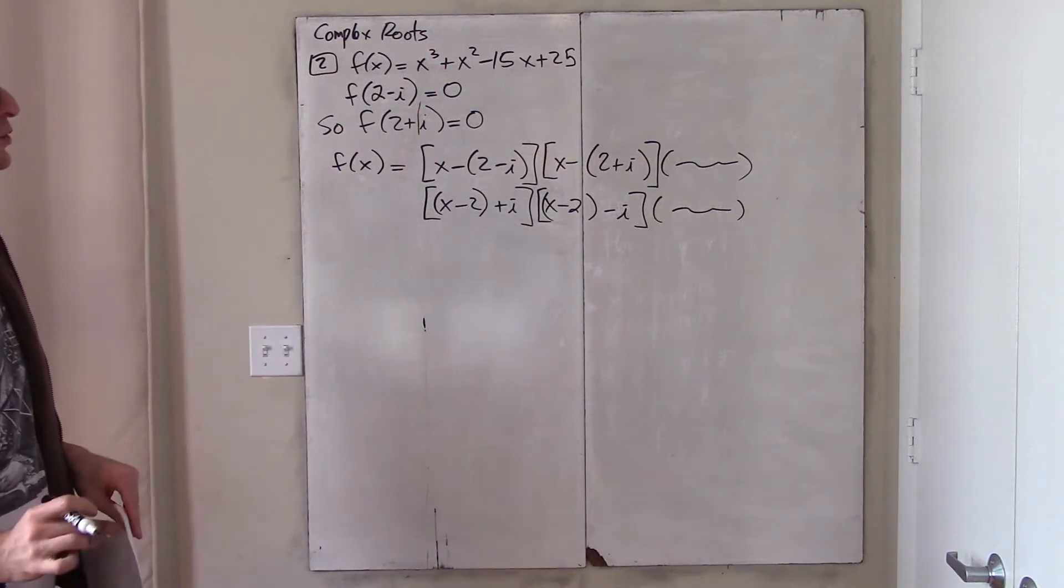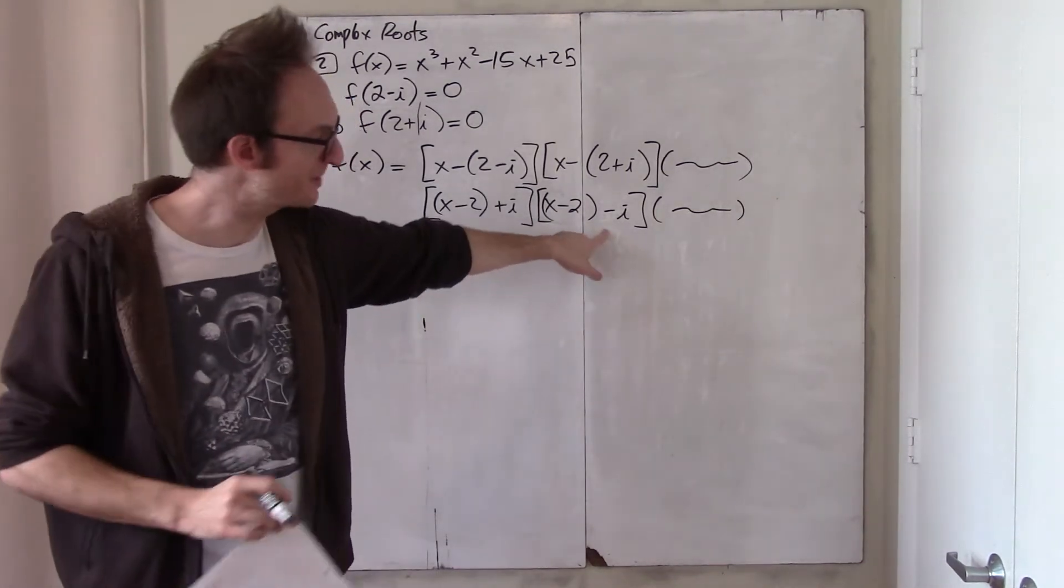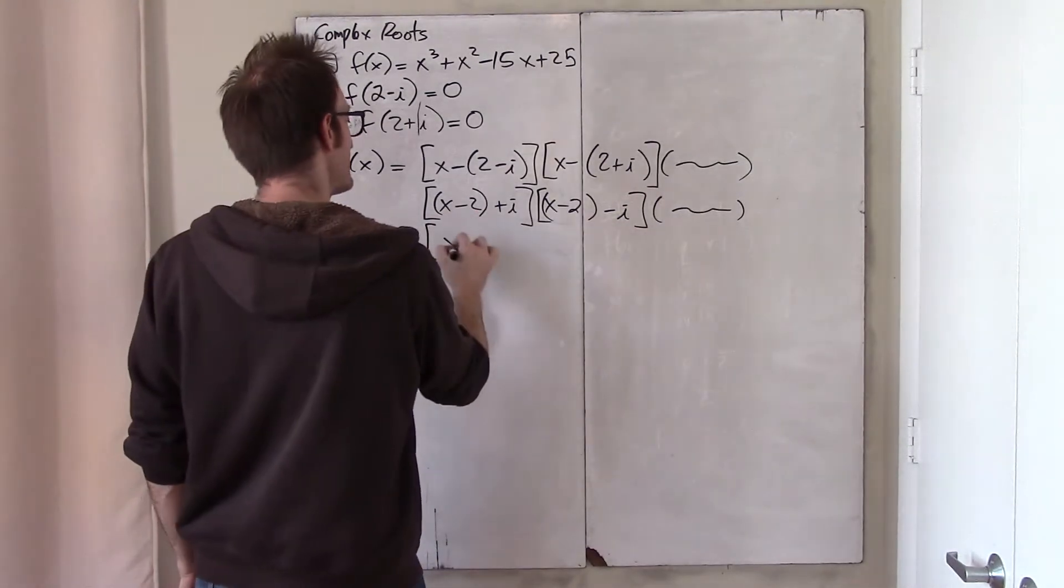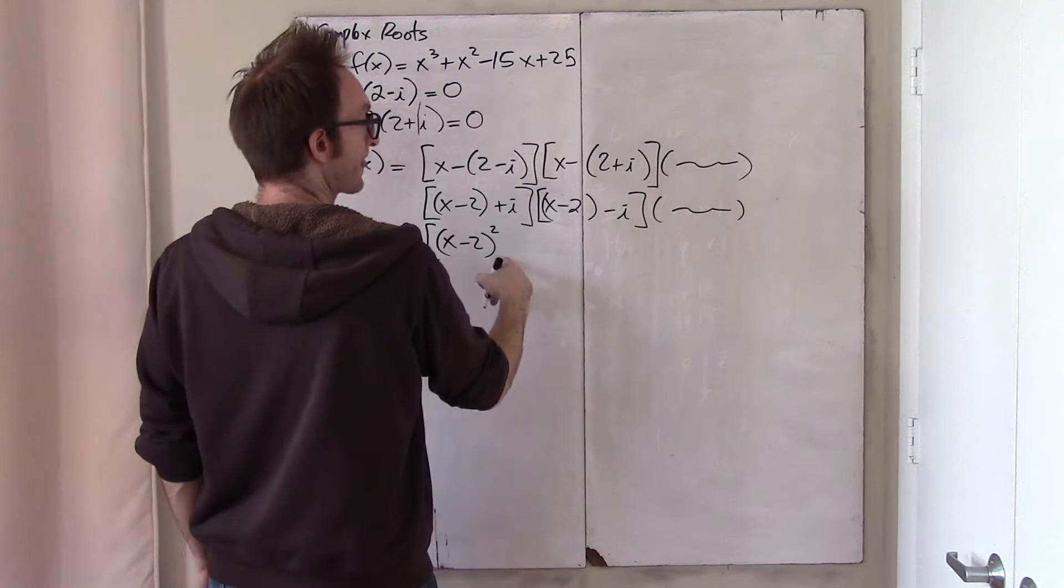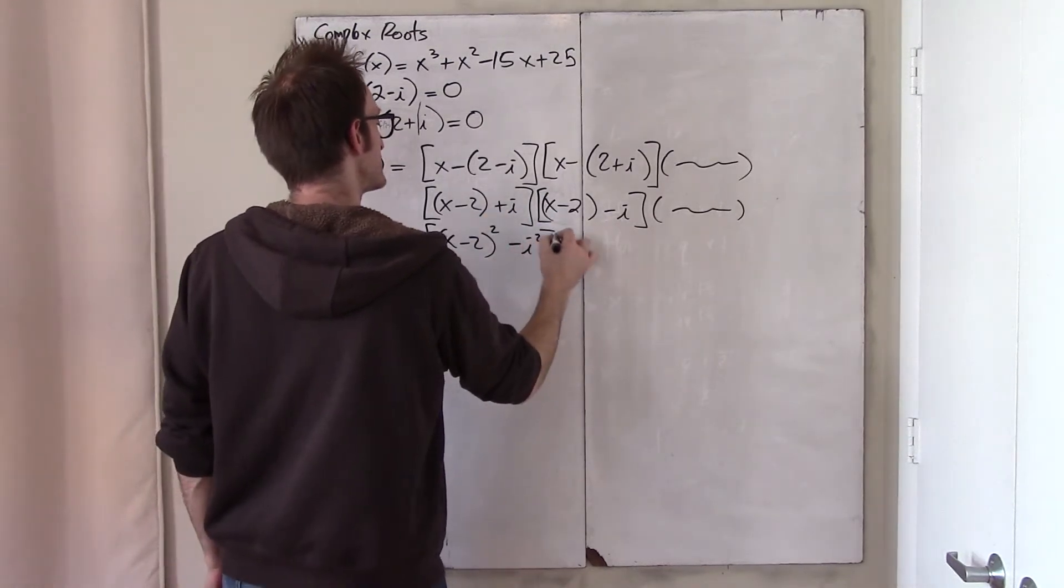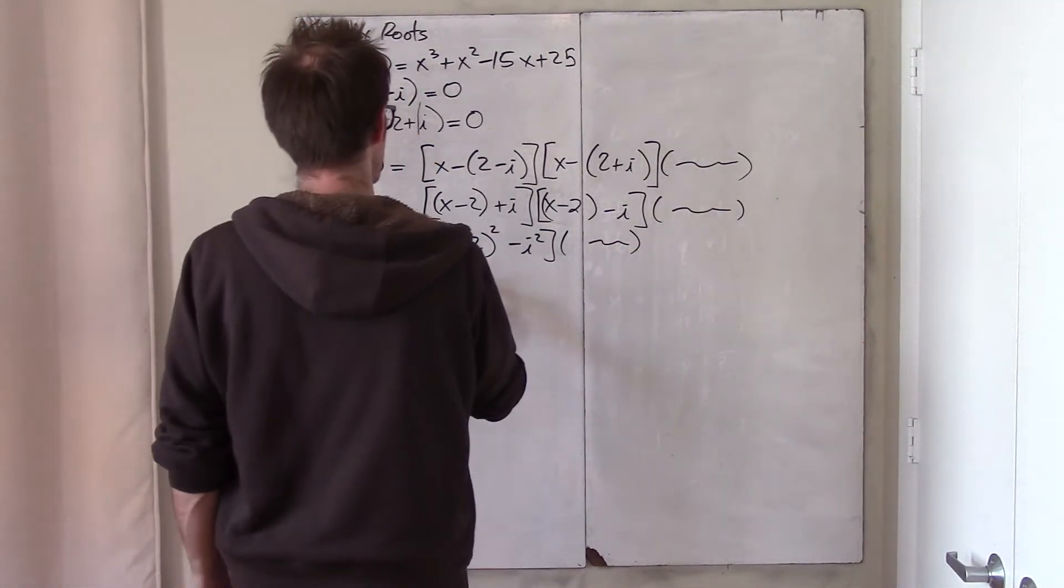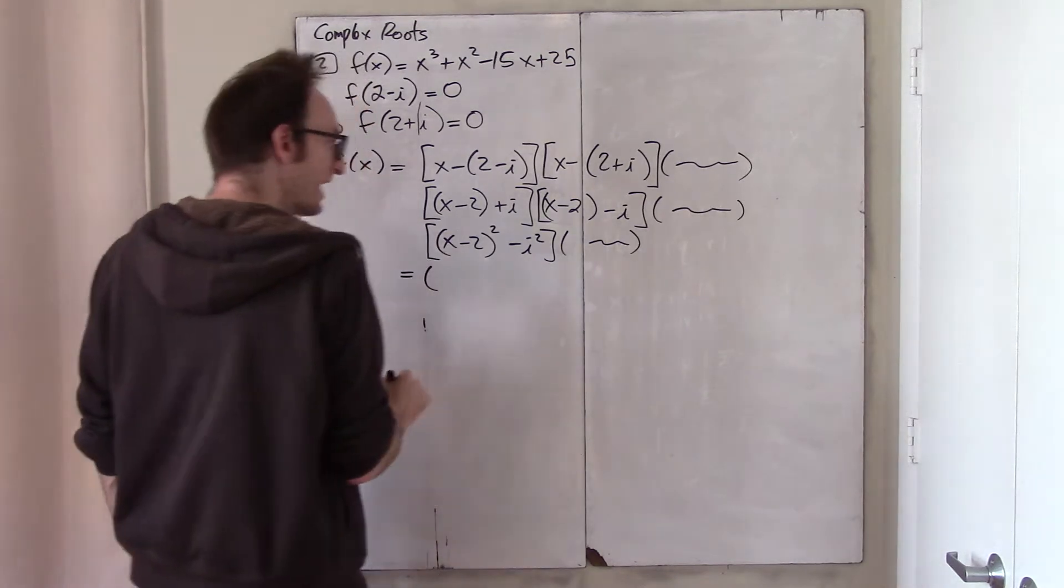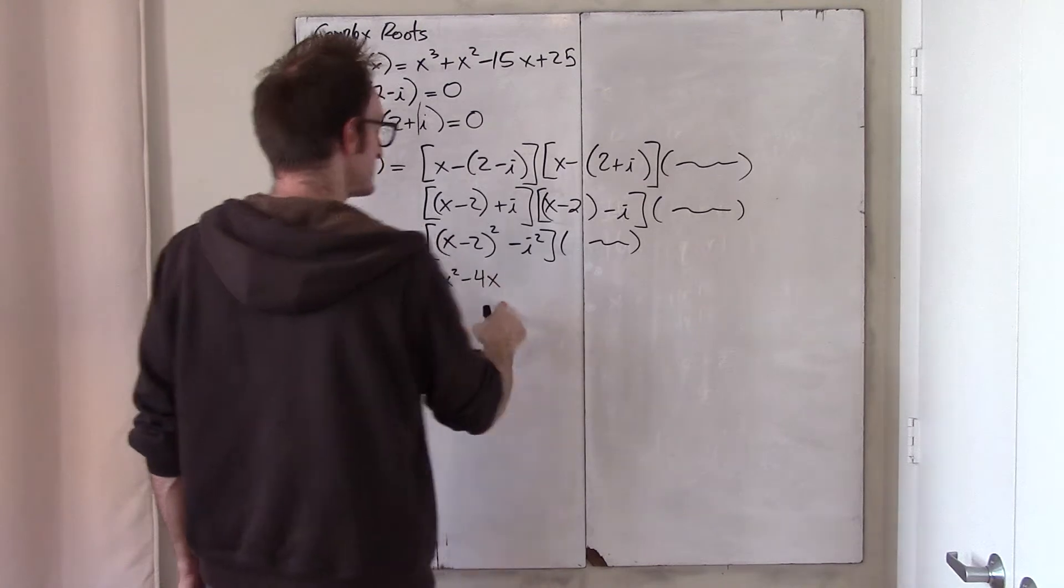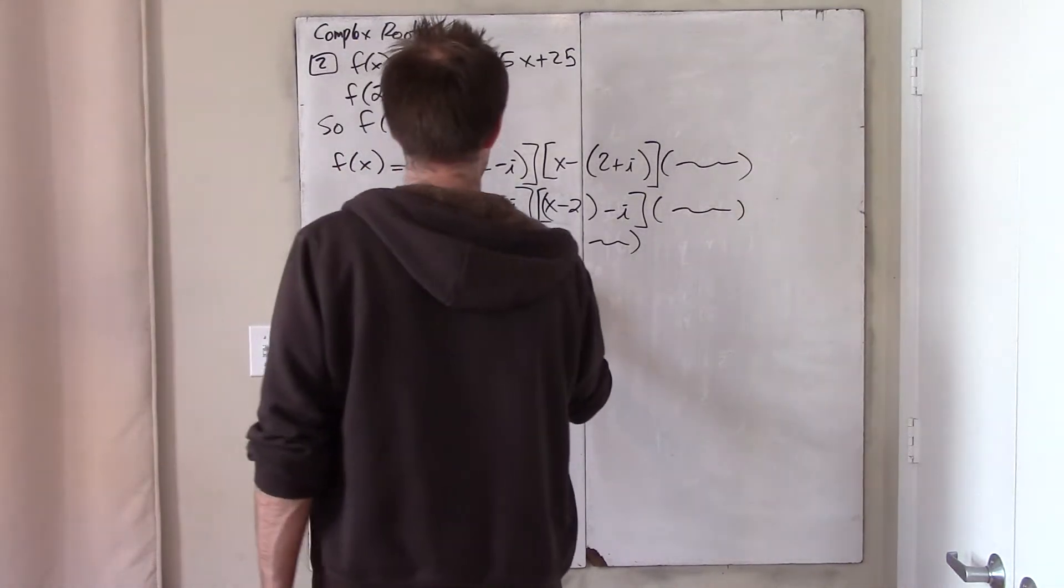And if each of those are factors, it might be nice to multiply them through. And here, I do that, because this is of the form a plus b, a minus b. So, that's the difference of squares. And so, if I just multiply that out, I get (x minus 2) squared, minus i squared, which is negative 1, times some stuff. Simplifying this, I get x squared minus 4x, then plus 4, but minus i squared is plus 1. So, that's plus 5.